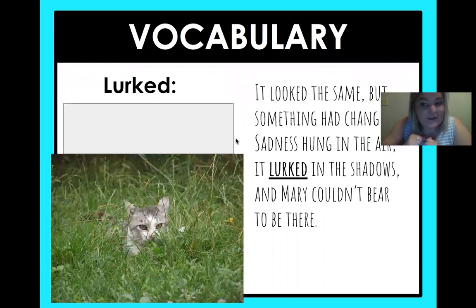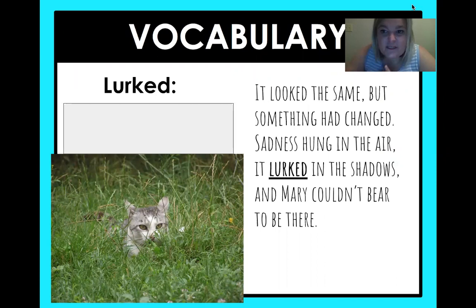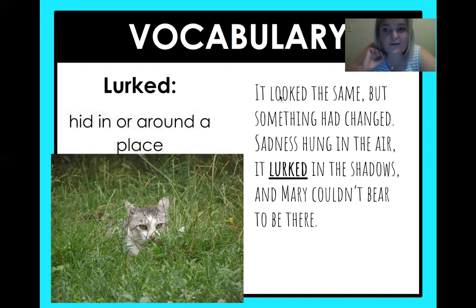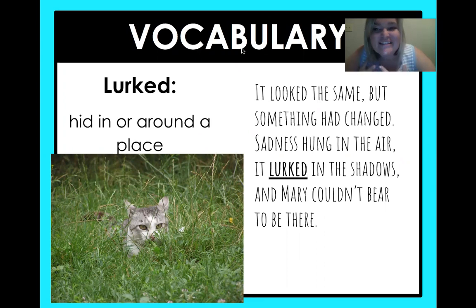Now for vocabulary — you know how much I love my vocabulary. The first word is so funny: it's 'lurked.' I just look at that cat in the grass because my cats do this all the time. So what could 'lurked' mean? 'It looked the same, but something had changed. Sadness hung in the air. It lurked in the shadows and Mary couldn't bear to be there.' It means 'hid in or around a place.' So that cat's hiding in the grass — and oh my gosh, what perfect timing — this cat is lurking in my screen! I'm so sorry about that, fourth graders. Now that the cat is no longer lurking in this screen, we know that 'lurked' means hidden in or around a place.